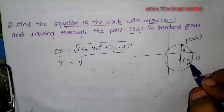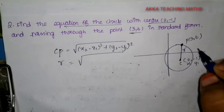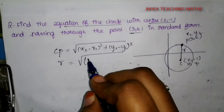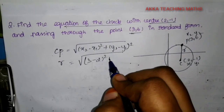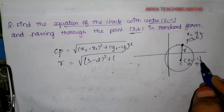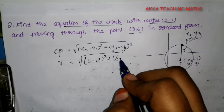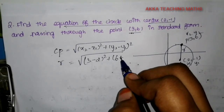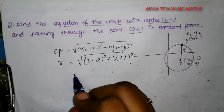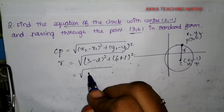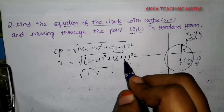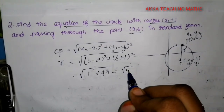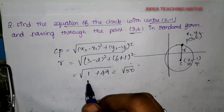So x1, y1, x2, y2 — x2 value is 3, minus x1 value is 2, the whole square, plus y2 value is 6, minus y1 value is -1. Minus into minus gives plus 1. So (3 - 2) = 1, squared is 1. And (6 + 1) = 7, squared is 49. Adding these: 1 + 49 = 50. So we should get 50.